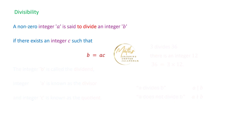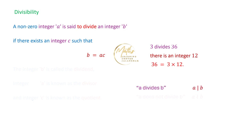For example, we say 3 divides 36 because there exists an integer 12 such that 3 into 12 is equal to 36. So we say that 3 divides 36. Whenever an integer A divides B, we write it using the notation for A divides B. And if A does not divide B, we use the notation for that as well.